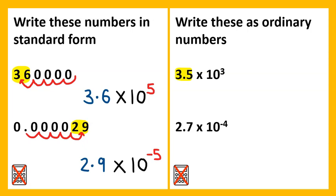Writing these as ordinary numbers, using the front number, 3.5. We can see that this is raised to the power of 3. So moving 1, 2, 3 times. Again, filling the jumps with 0s. In this example, you may want to rewrite the number without the decimal point in between the 3 and the 5. So the final answer would be 3,500.